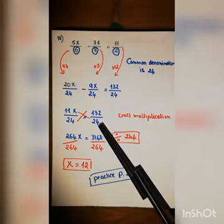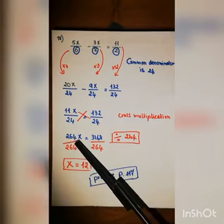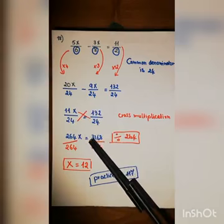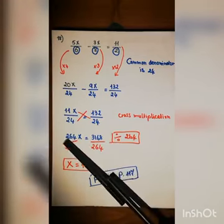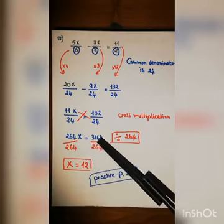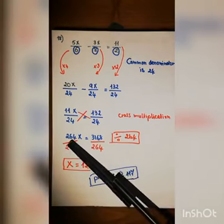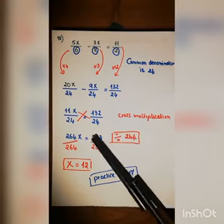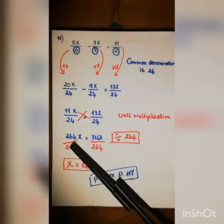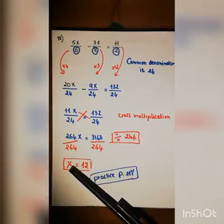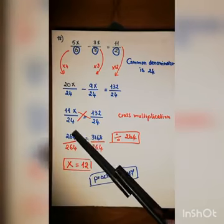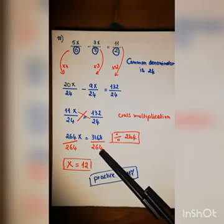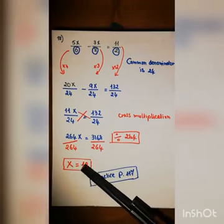Twenty x minus nine x equals eleven x over twenty-four equals one hundred thirty-two over twenty-four. Cross multiplication gives eleven x times twenty-four equals two hundred sixty-four x, and twenty-four times one hundred thirty-two equals three thousand one hundred sixty-eight. Dividing both sides by two hundred sixty-four, x equals three thousand one hundred sixty-eight divided by two hundred sixty-four, which is twelve.